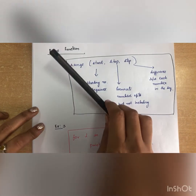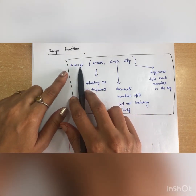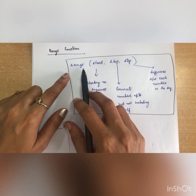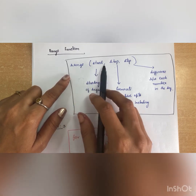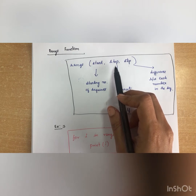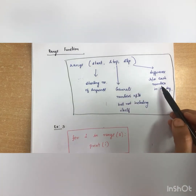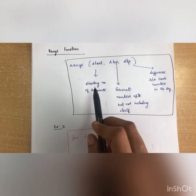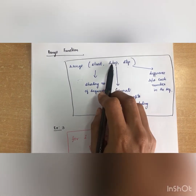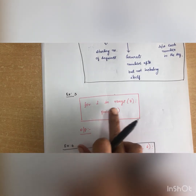Now we will see the use of the range function in for loop. The syntax is range(start, stop, step). Start gives the starting number of the sequence, stop gives the ending number but does not include it, and step gives the difference between each number in the sequence.